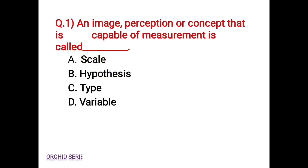First question: An image, perception, or concept that is capable of measurement is called — Option A: Scale, Option B: Hypothesis, Option C: Type, Option D: Variable. The correct answer is Option D, Variable. An image, perception, or concept that is capable of measurement is called Variable.